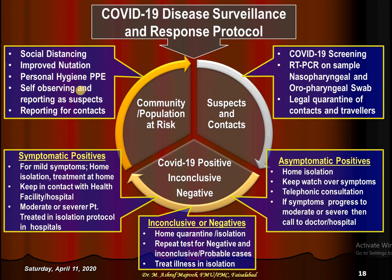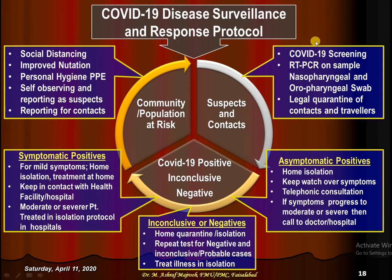For the community population at risk, all community members should practice social distancing for prevention and to improve nutritional and body defense. Personal protection measures should be taken whenever there is fear of exposure. Self-observation and reporting as a suspect or contact is the responsibility of the community. This cycle is repeated continuously — this is exactly the COVID-19 disease surveillance and response protocol.